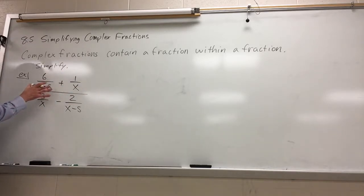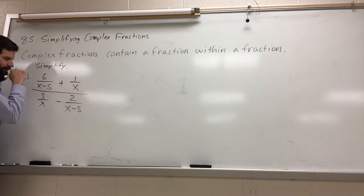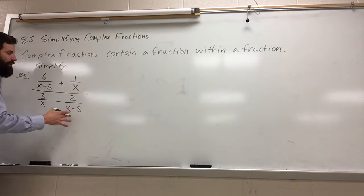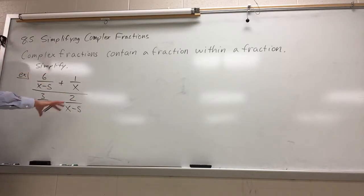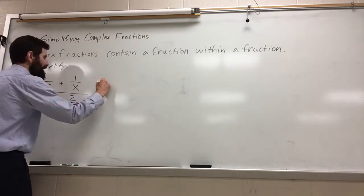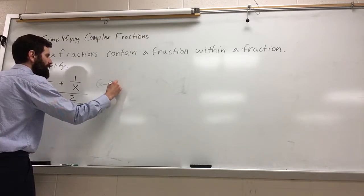What I'm going to do is multiply by the common denominator of everything. Right here we've got an x minus 5, that's one of my factors. I've got an x, another x, and another x minus 5. So my common denominator of everything would be x minus 5 and x.